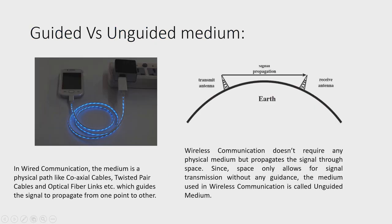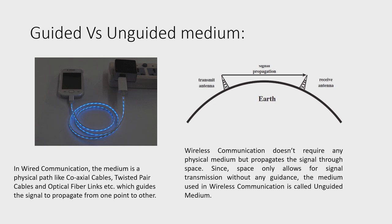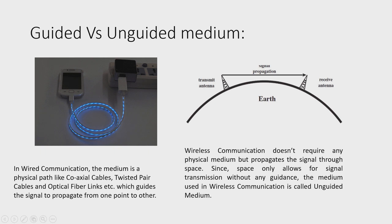Now, let us see what guided versus unguided medium is. In wired communication, the medium is a physical path, just like the fiber optic link as shown in the figure. This link guides the signal to propagate from one point to another point, and hence it is called a guided medium. In the second figure, we can observe wireless communication, and as it is not using any physical medium, the space only allows the signal transmission without any guidance. The medium is called an unguided medium. So, the wireless medium is an unguided medium.